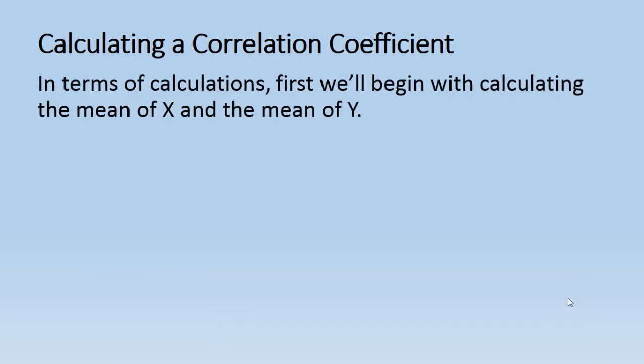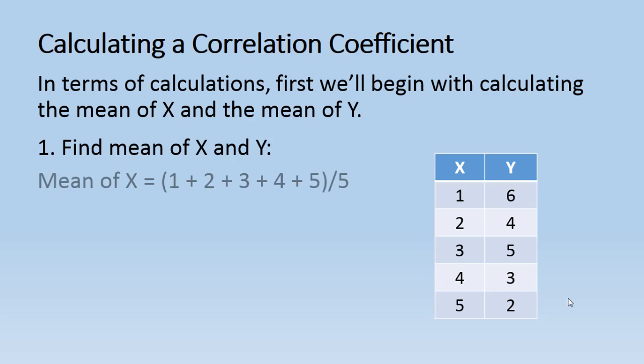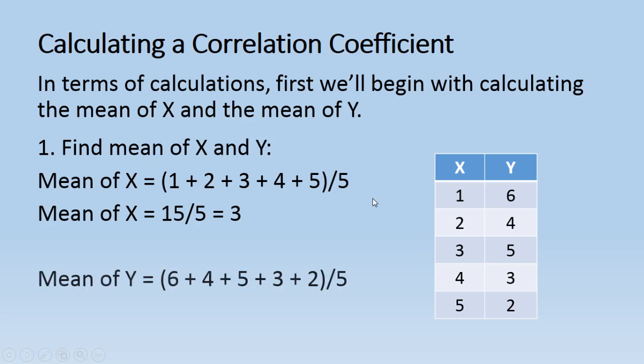In terms of the calculations, first we'll begin with calculating the mean of X and the mean of Y. So to find the mean of X and Y, starting with X, we're just going to add all of these values together and divide by the number of values that there are. So 1 plus 2 plus 3 plus 4 plus 5 divided by 5 total gives us a mean of 3 for X. And then we'll do the same for Y. So we add all these values and divide by 5, and that gives us a mean of 4.